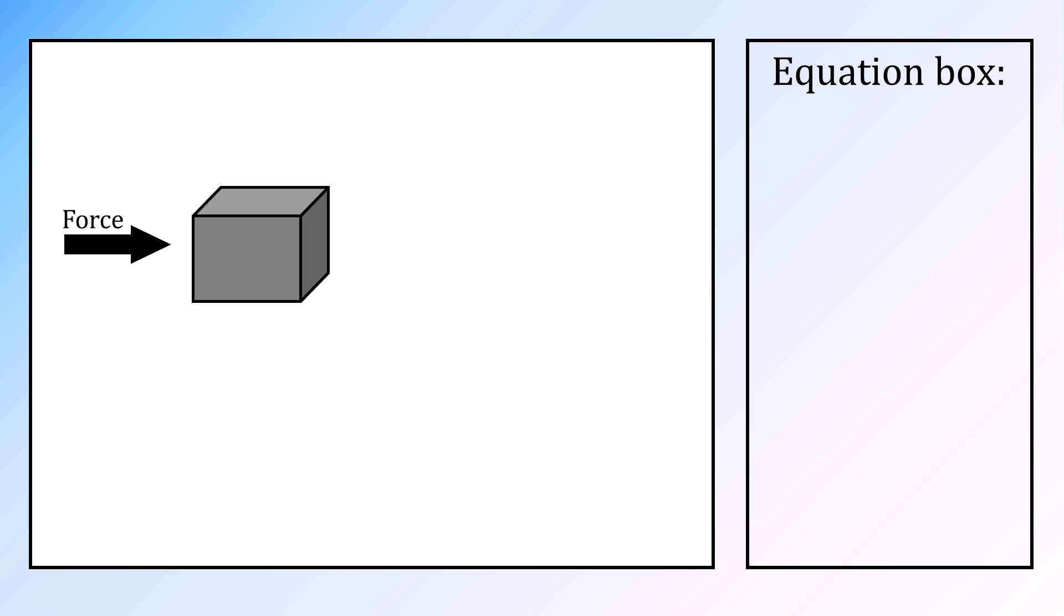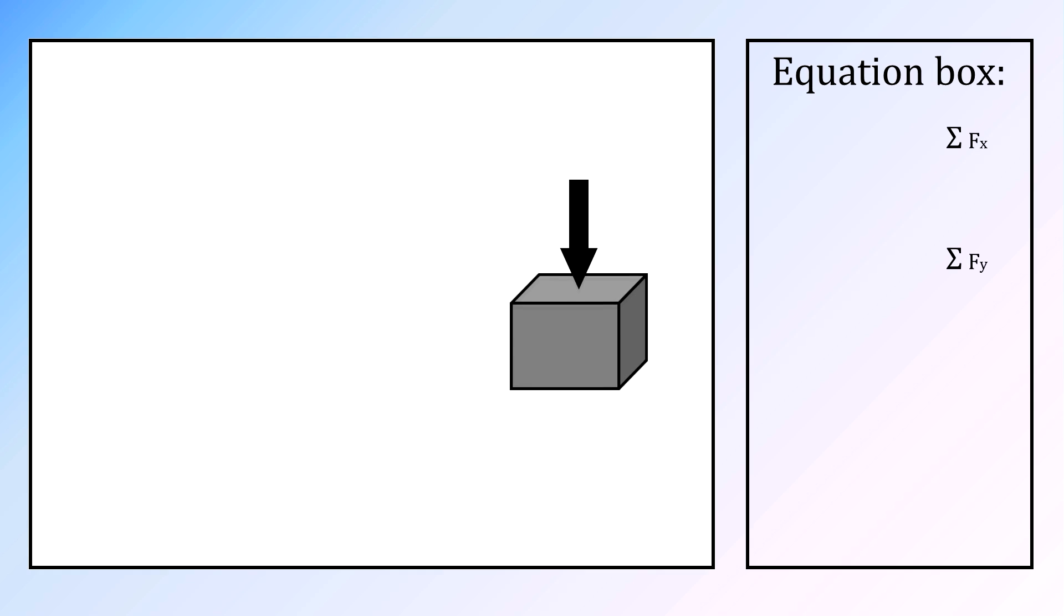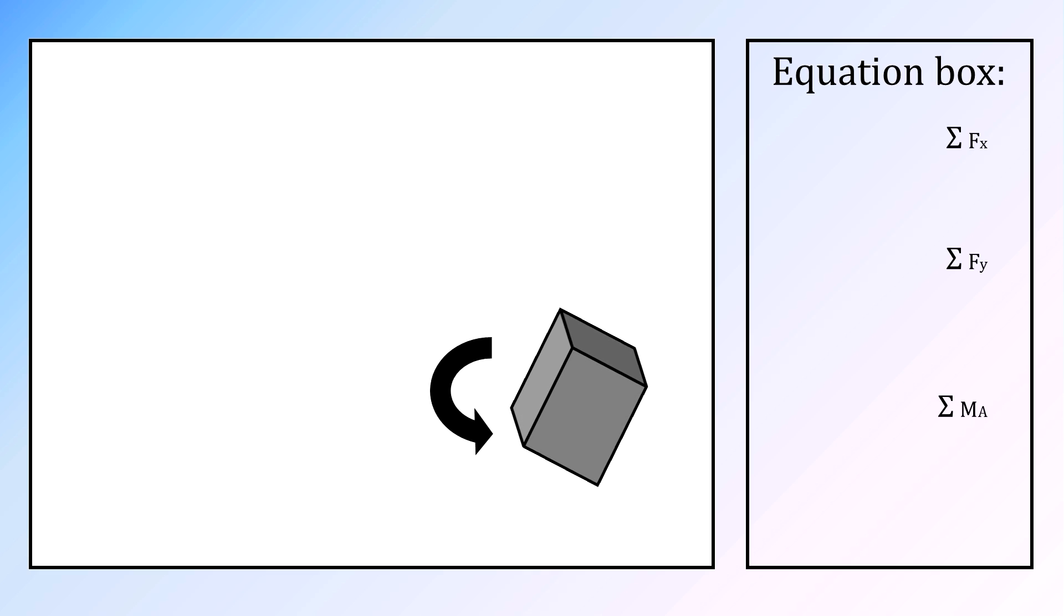First, some basic physics. A net force on an object causes it to start moving, that could be horizontal or vertical. Furthermore, a net moment will let it rotate. For this bridge, both are not the case. Therefore, all are equal to zero. These three formulas are the start for every structural engineering problem.